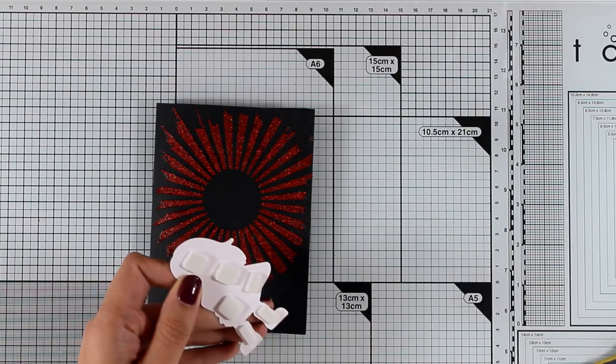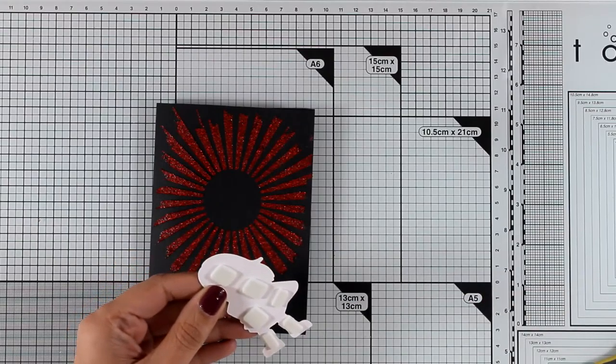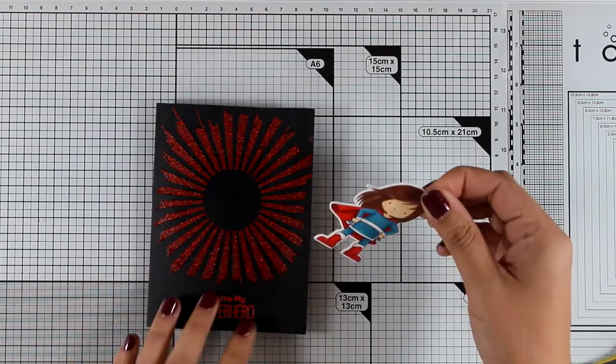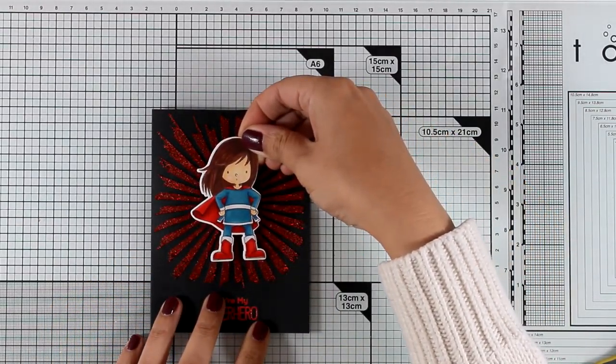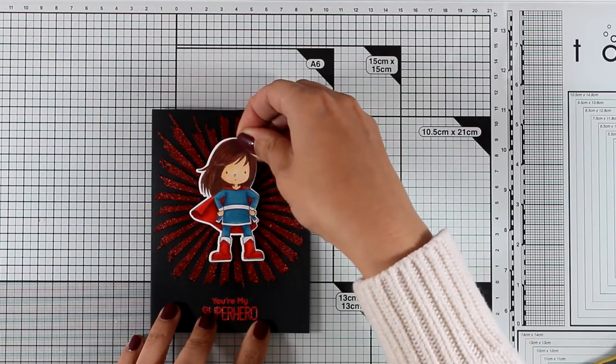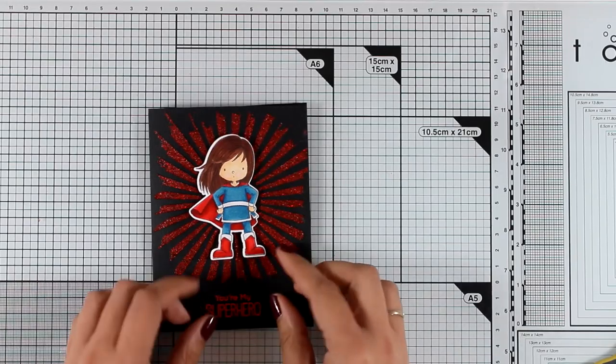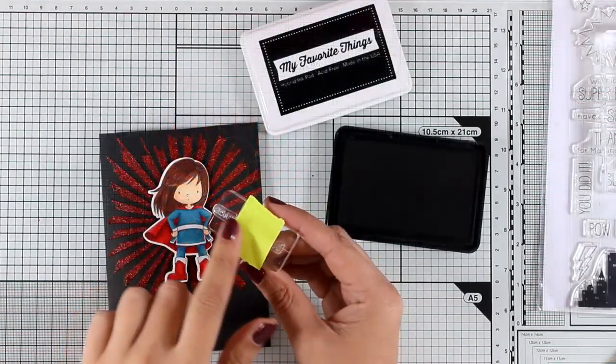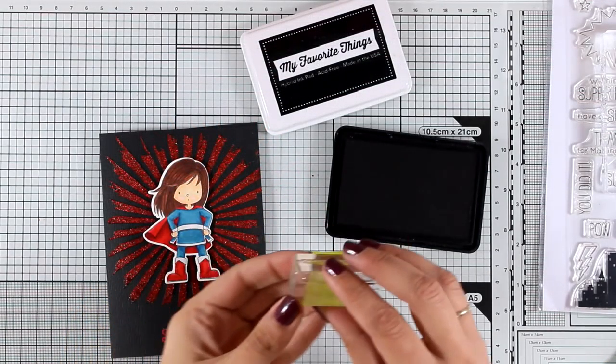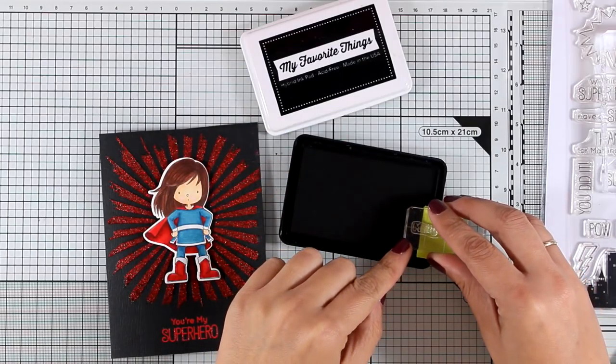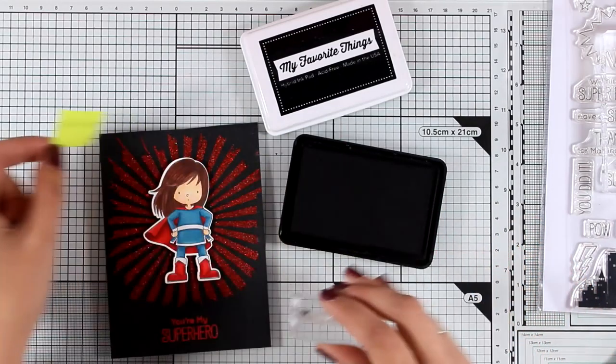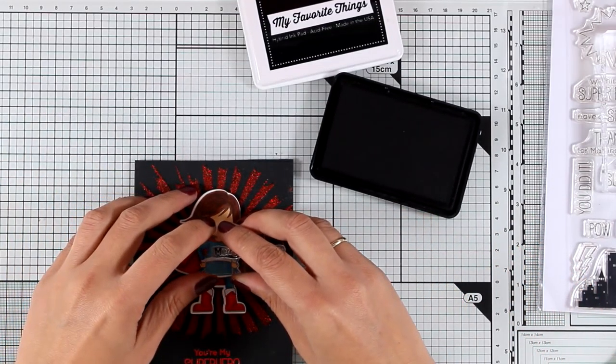I went for a very traditional superhero color with blues and reds just like Superman and I'm going to stick her on top of my card. I'm going to add some foam squares at the back to add a little bit of dimension on her. It's a very simple looking card but at the same time so striking with her at the center and all the rays around her full of glitter. Now I am also going to personalize it a little bit.